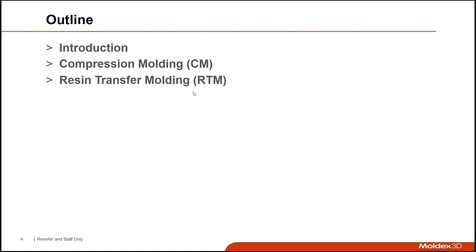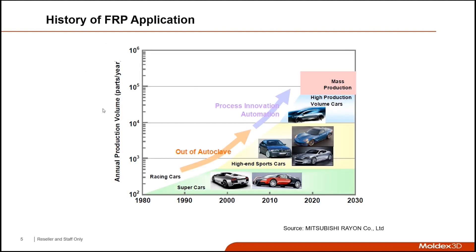Our agenda today is going to be pretty simple. We're going to be talking about compression molding and resin transfer molding — two composite manufacturing processes that have sprouted up over the last decade or two, and they can really help us control any sort of composite molding that we're doing. We'll also cover the history of fiber reinforced plastic applications, starting in the automotive industry, probably one of the most prevalent FRP applications out there.